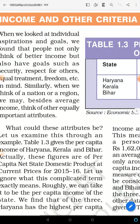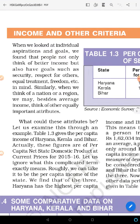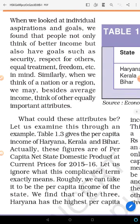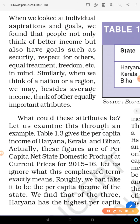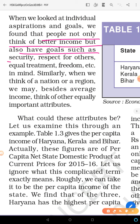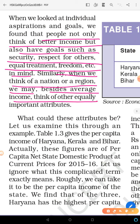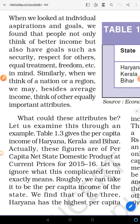So we come to the next topic: income and other criteria. When we look at individual goals, people not only think of better income but also have goals such as security, respect for others, equal treatment, and freedom. Similarly, when we think of a nation or region, besides average income, we should think of other equally important attributes for comparison.